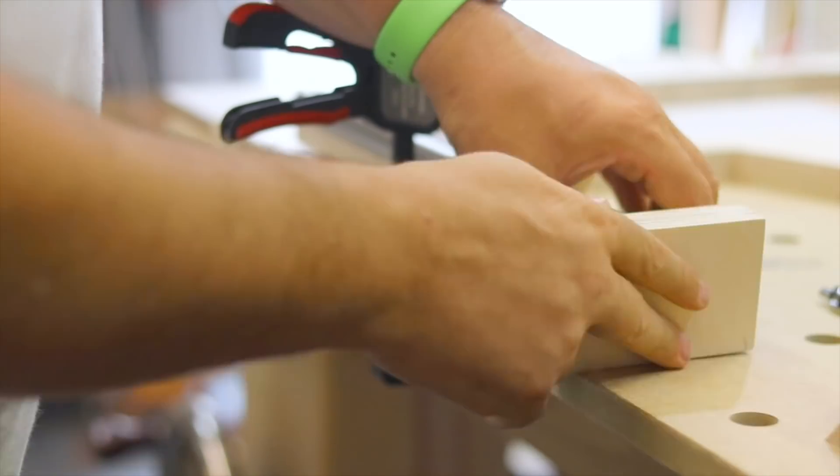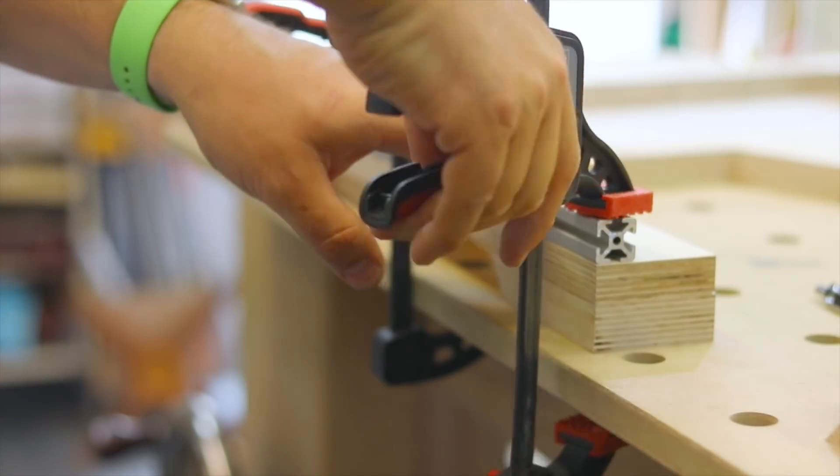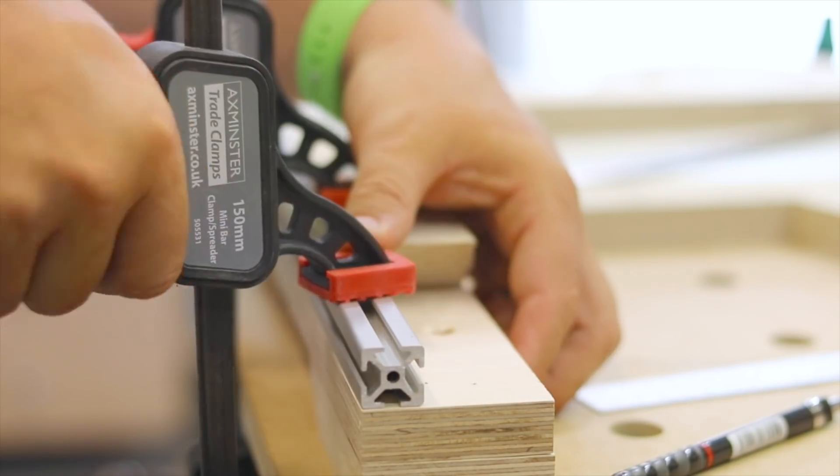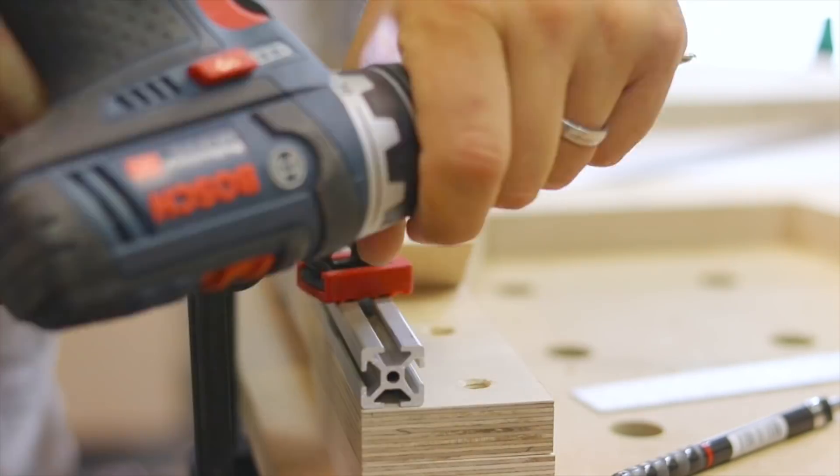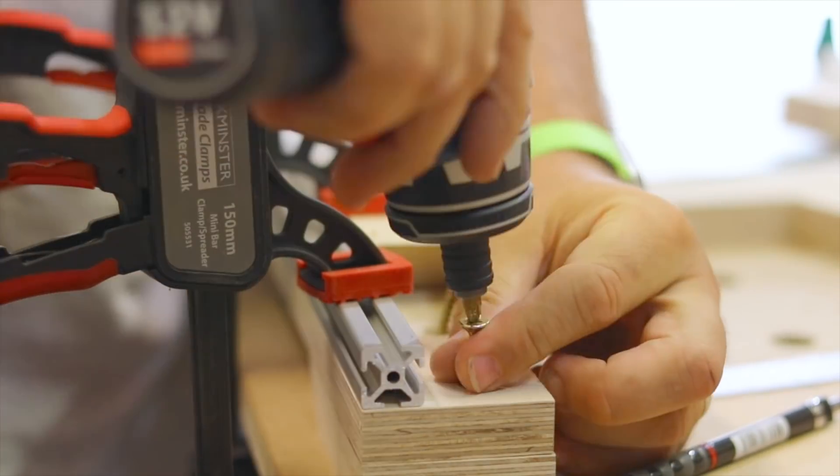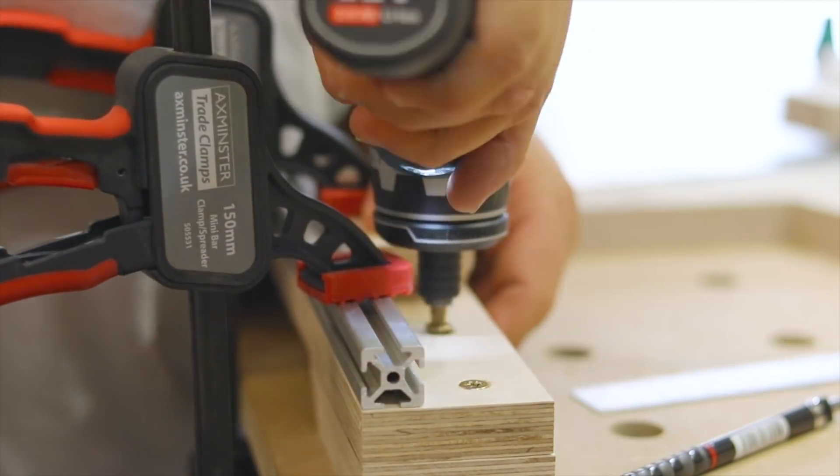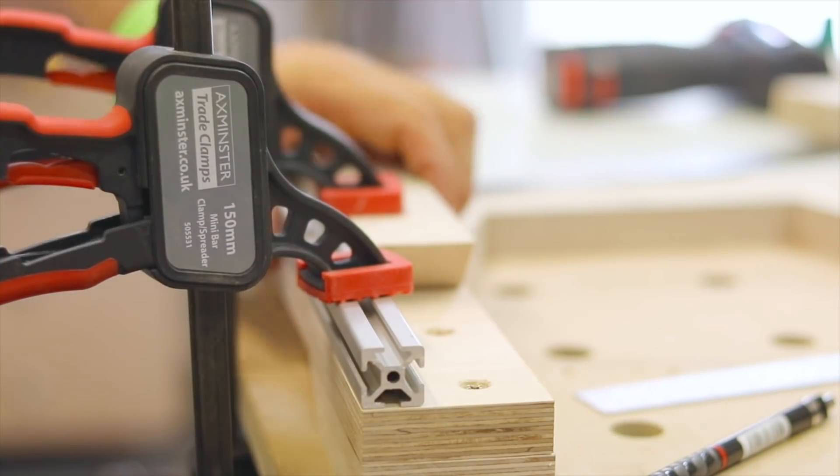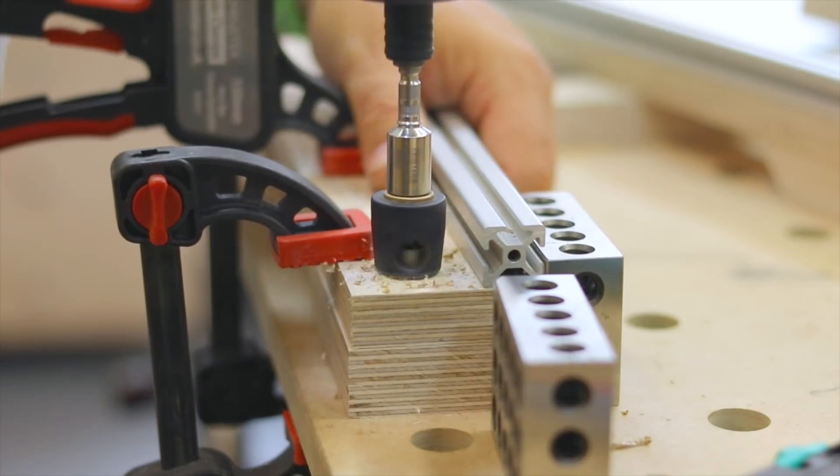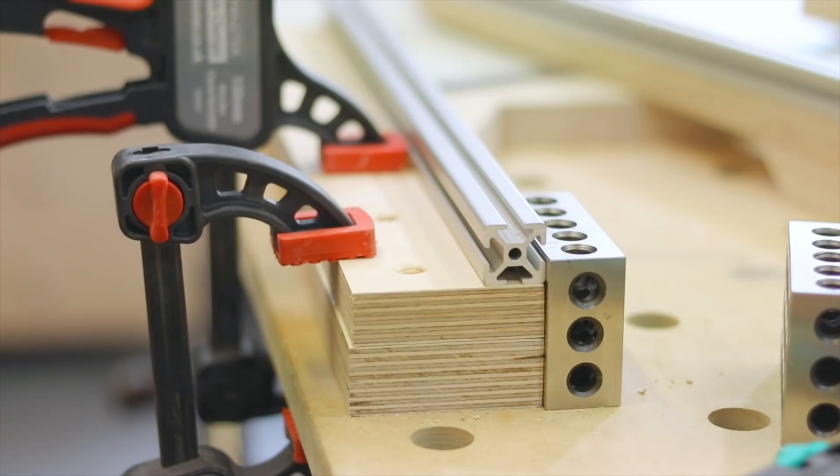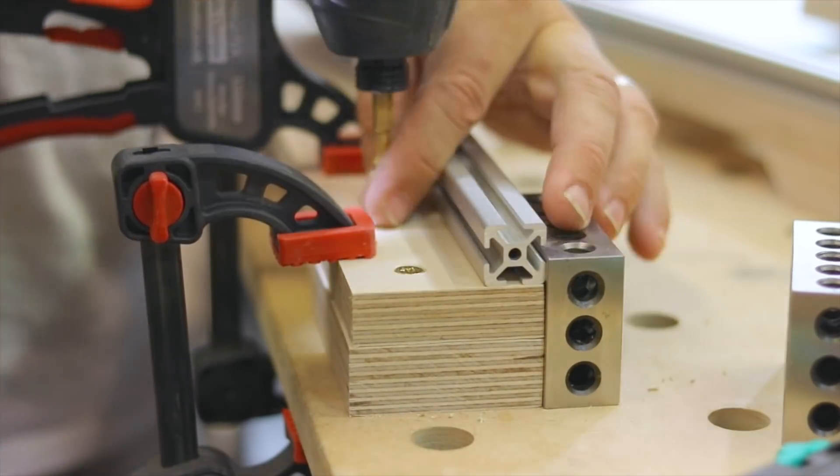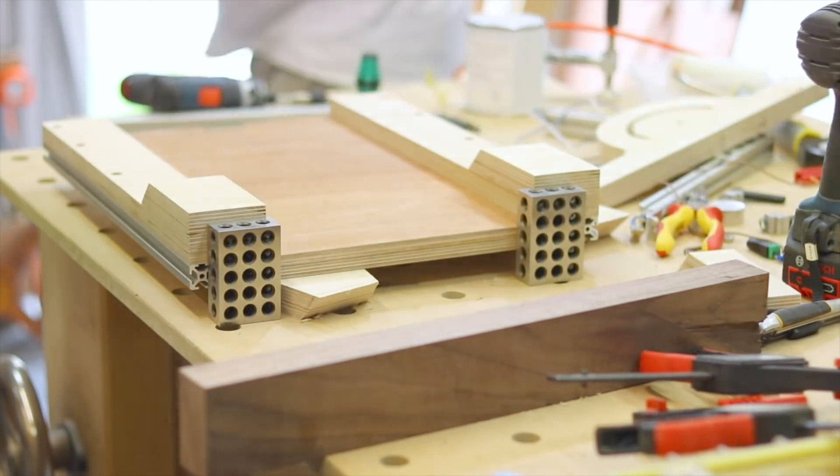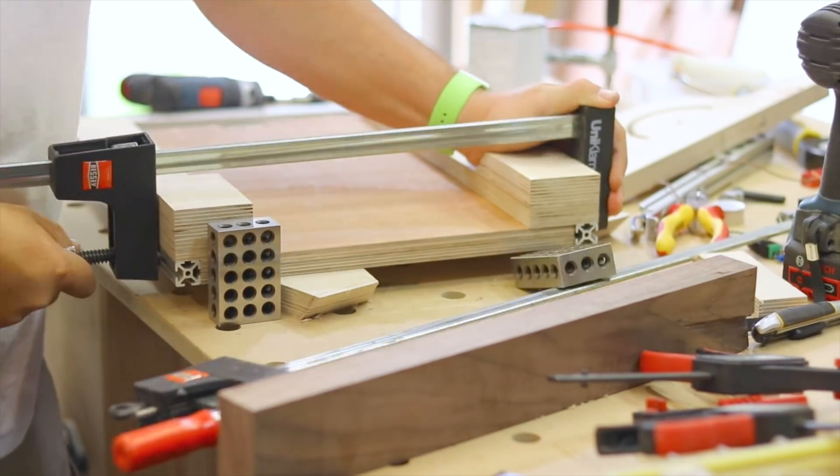So I'm clamping down and squaring up the front feet so that I can countersink and screw from above. I seem to get more questions about the tools I use when I post a video, so I'll answer one that I predict. The countersink bit that I'm using is a Festool Sentra Tech, and it's brilliant. That's all I can really say about it. I just love it.